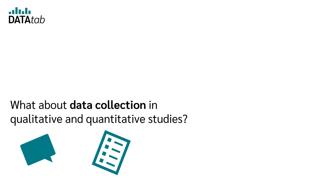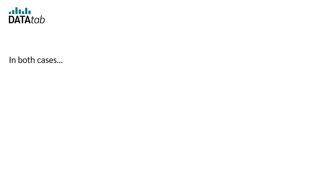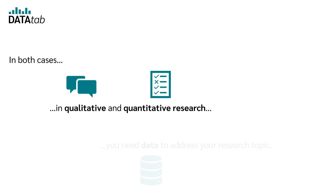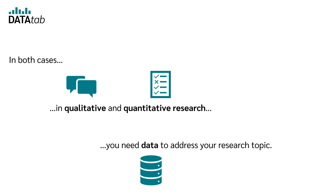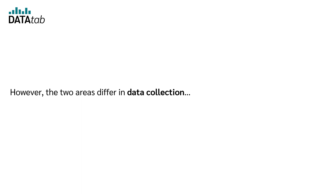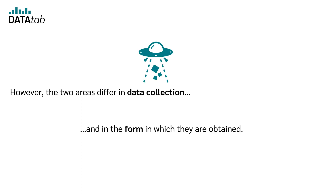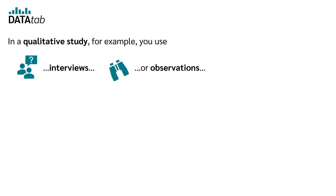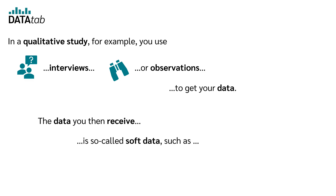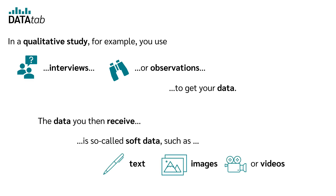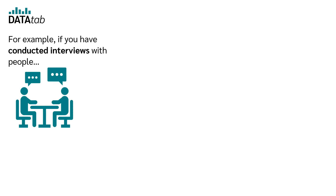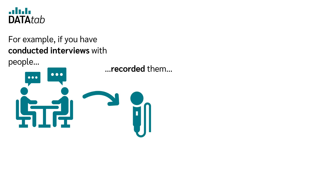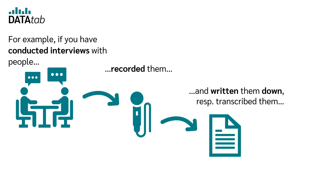What about data collection in qualitative and quantitative studies? In both cases you need data to address your research topic, but the two areas differ in how data is collected and the form in which it is obtained. In a qualitative study, you use interviews or observations to get your data. The data you receive is so-called soft data, such as text, images, or videos. For example, if you have conducted interviews, recorded them, and transcribed them, your data is available in text form.